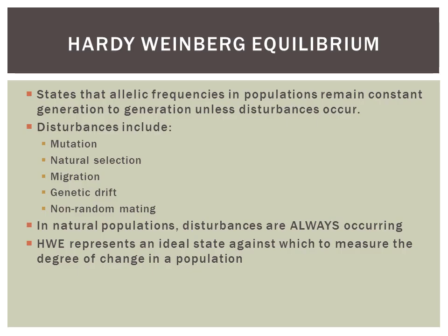The Hardy-Weinberg Equilibrium states that allelic frequencies in populations remain constant generation to generation, unless disturbances occur. Disturbances can include mutation, natural selection, and migration — which means individuals coming into the population or leaving the population.